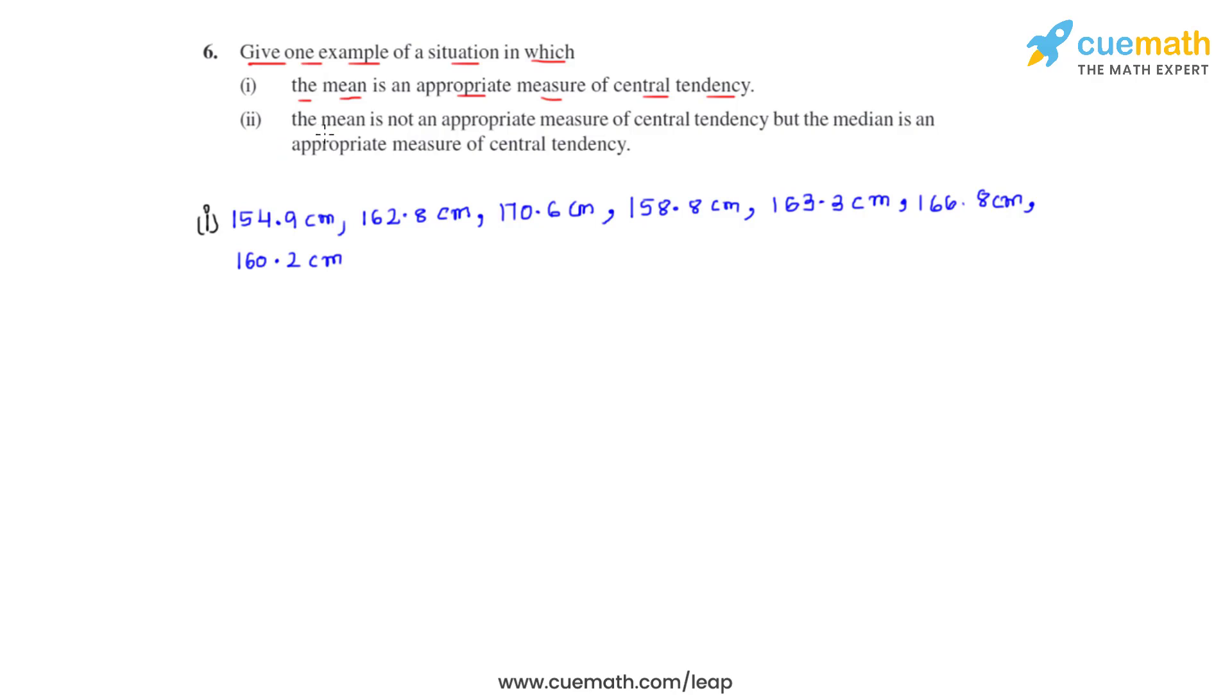Now the next part of the question says we have to give a situation in which the mean is not an appropriate measure of central tendency but the median is. So as already discussed, any data which has got extreme values cannot have mean as its appropriate measure of central tendency.